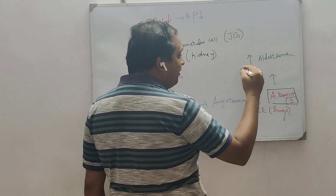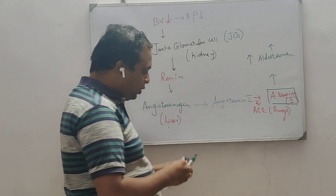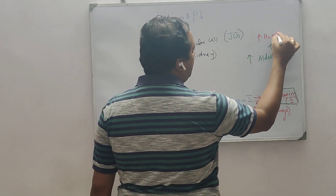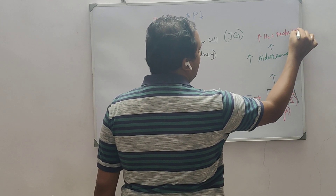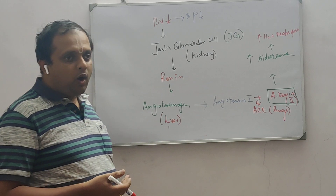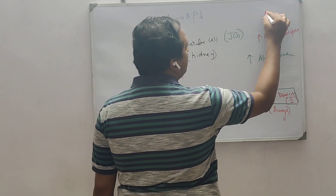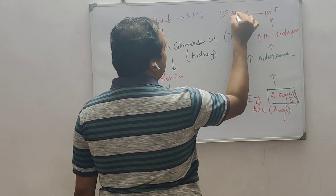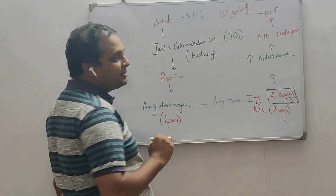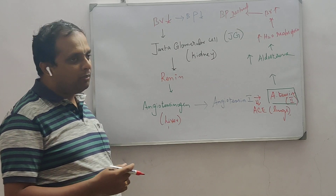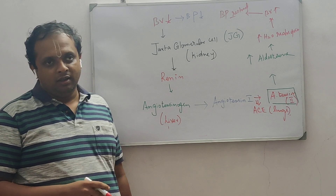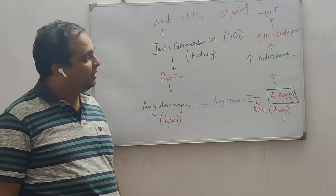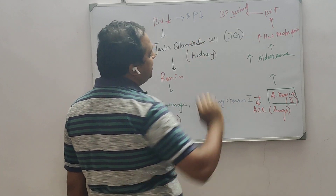The zona glomerulosa is the layer of the adrenal cortex which produces aldosterone. Angiotensin II stimulates this zone, causing aldosterone levels to increase. Aldosterone then increases water reabsorption, raising blood volume, and in turn blood pressure is restored. So the initial stimulus — decreased blood volume and blood pressure — triggers this entire sequence of events, ultimately restoring blood pressure.